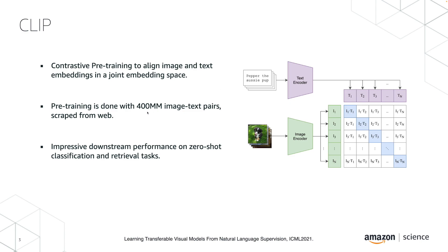Before I dive into the details, I need to tell you what CLIP is. CLIP is an image-text representation learning model that learns to align these representations in a joint embedding space. Given some images and their corresponding textual descriptions, you pass them through their corresponding encoders — text and visual encoder — and match these embeddings via dot product, trying to maximize the similarity between the corresponding representations of images and text, while keeping them far from non-corresponding images and text.